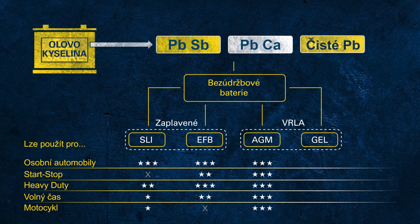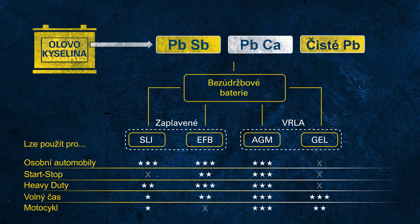AGM provides outstanding performance for all applications, including high-demand electrical systems of luxury cars, SUVs, or fully equipped long-haul trucks with an electrical parking cooler. Gel batteries are not very common in automotive applications but are often used in leisure or motorcycle applications.